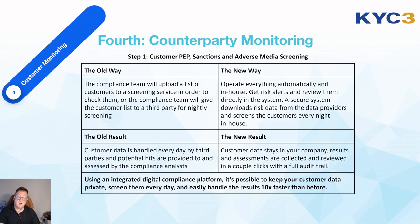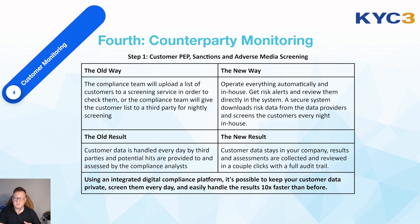The new way is to operate everything automatically and in-house. This is not a complex system and not a hard thing to do. You get risk alerts and review them directly in your system. A secure system downloads risk data from the data providers and screens the customers every night in-house, protecting your customer data and keeping it within your control at all times. The result is that you are GDPR compliant, you reduce risk, and you have a complete audit trail because you have a fully integrated system. Using an integrated digital compliance platform, it's possible to keep your customer data private, screen it every day, and handle the results much faster than before.